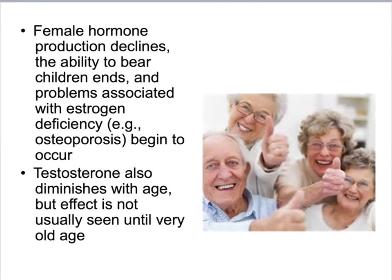Female hormone production declines with age, the ability to bear children ends after a certain point, and problems associated with estrogen deficiency include osteoporosis. Testosterone also diminishes with age, but its effect is not usually seen until very old age.